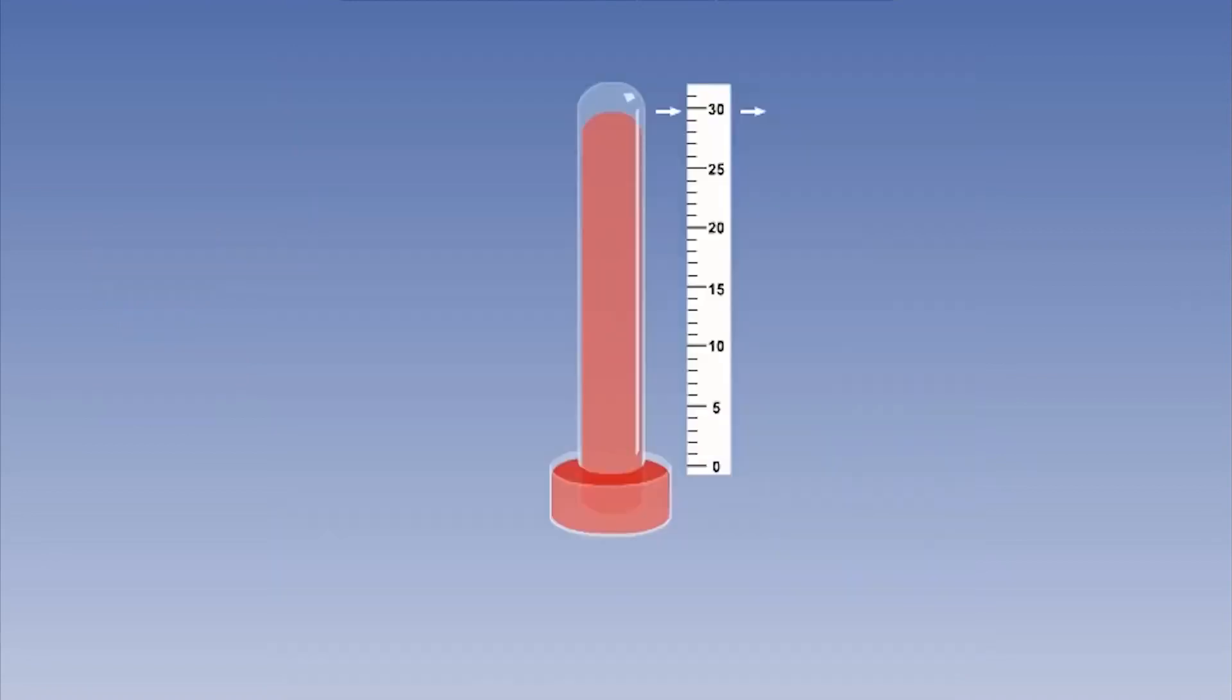Going back to the mercury barometer, once calibrated, the average sea level pressure will displace the mercury from the level in the reservoir by 29.92 inches. The United States usually use inches for measuring pressure.